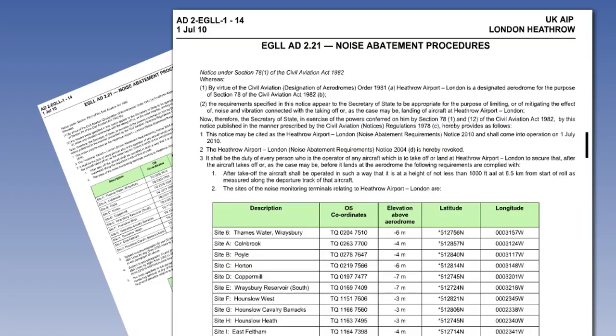Each state has to detail noise abatement procedures for each airfield in the Aeronautical Information Publication, or AIP. The procedures are principally designed for turbojet aircraft, although propeller-driven aircraft, both piston and turboprop, are sometimes specified in the procedures.